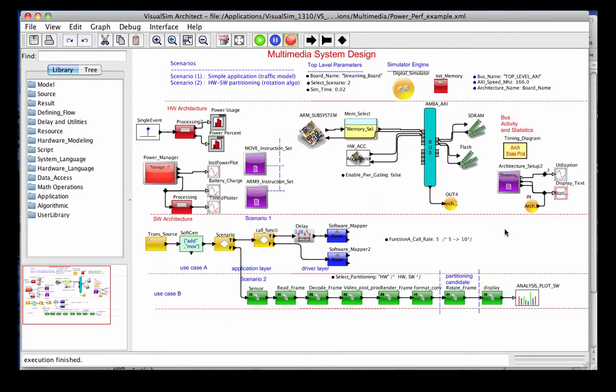Now, the simulation model within VisualSim Architect is a representative one where you're conducting function architecture mapping. On the lower hand of the model, we have a series of operations such as getting data from a sensor, reading frames, rendering the frames, etc., and that functionality is mapped onto the target architecture, which includes an ARM subsystem, hardware accelerator, and the memory hierarchy.